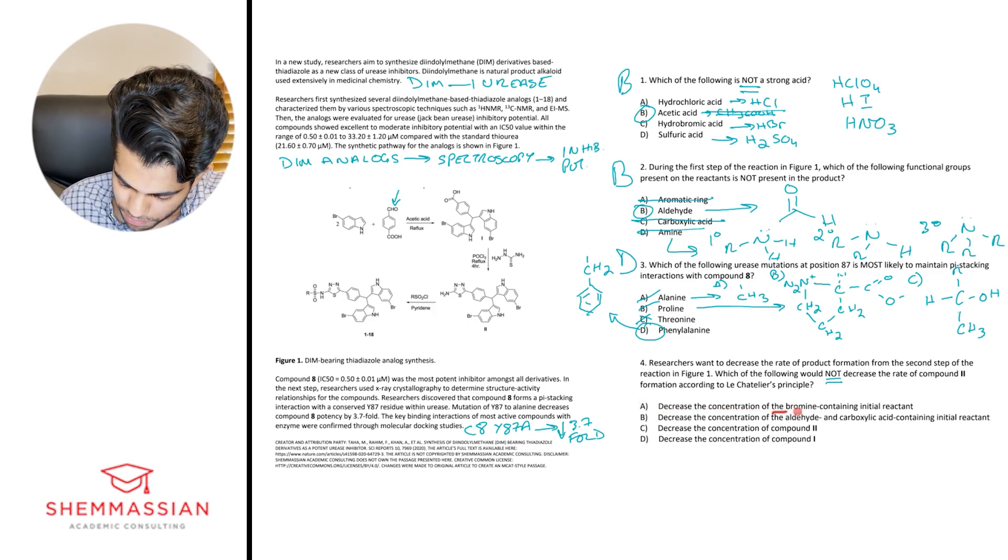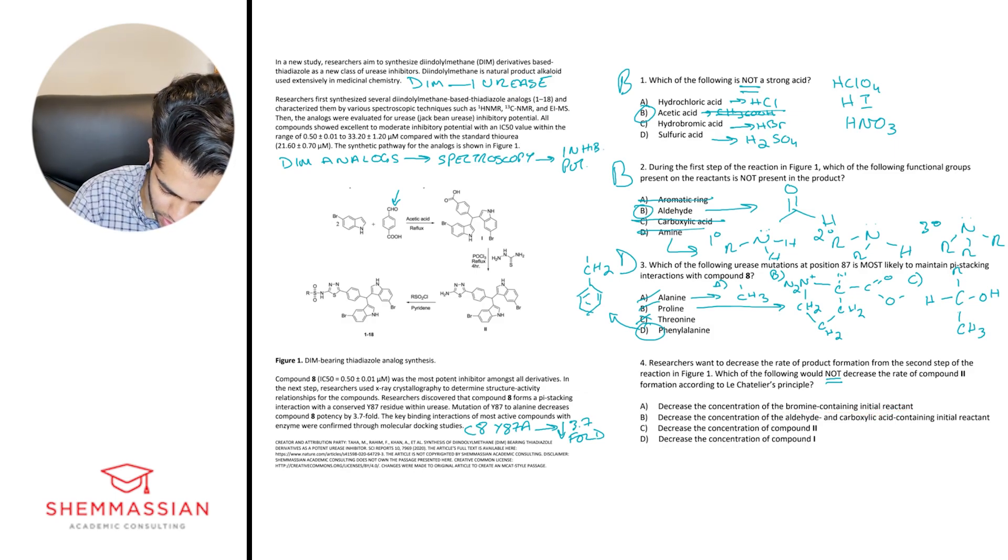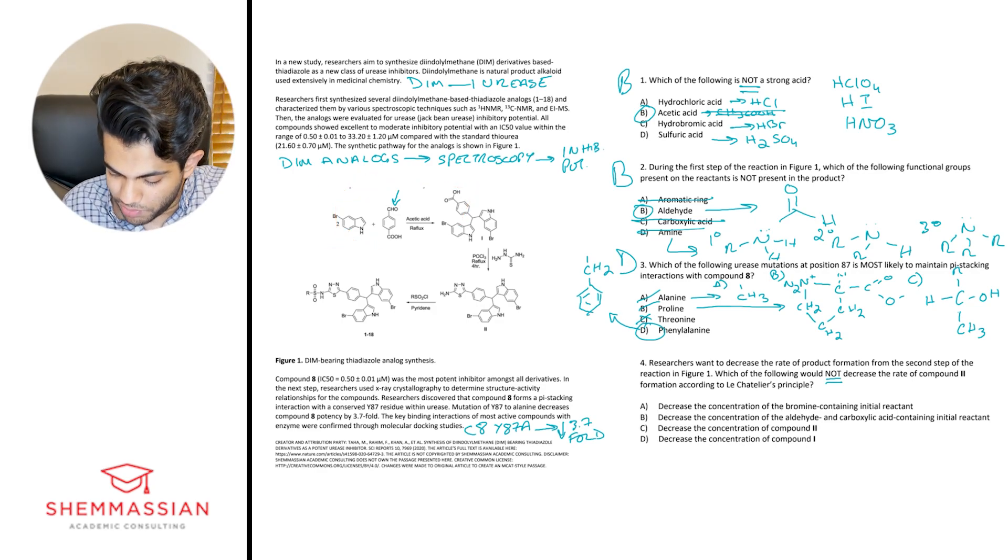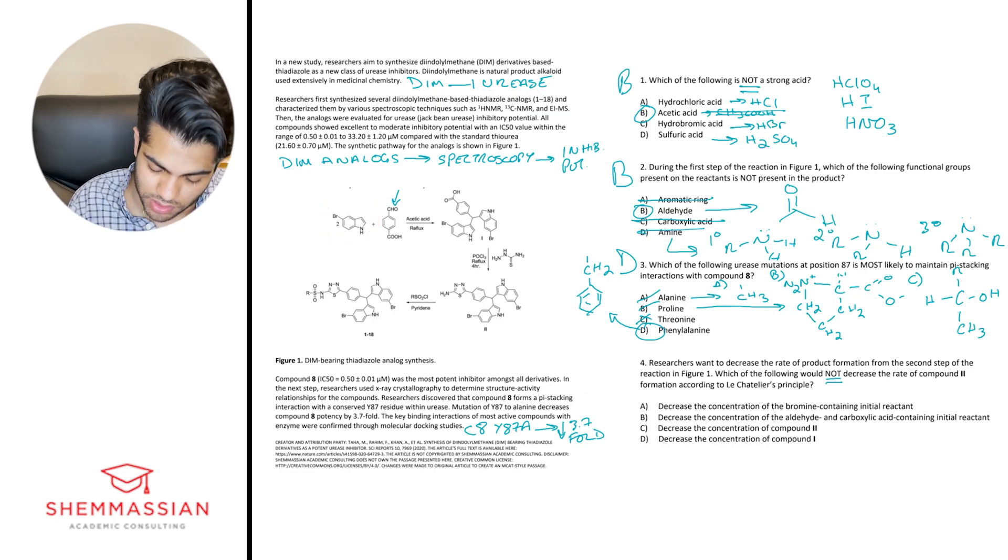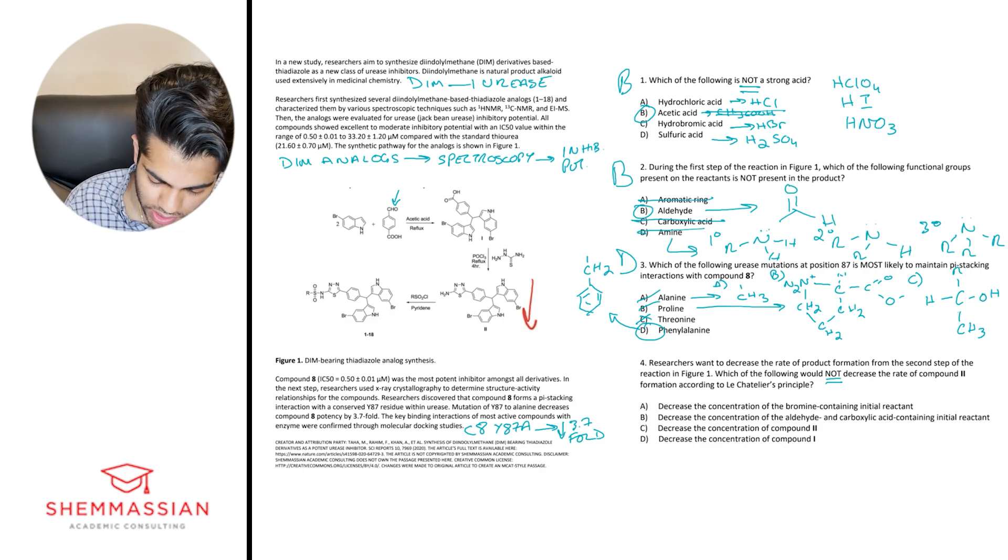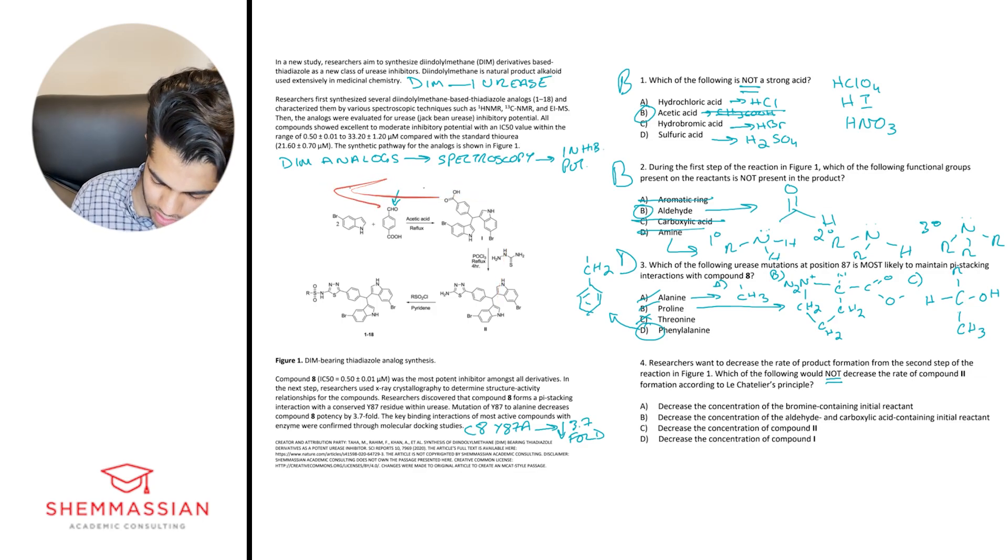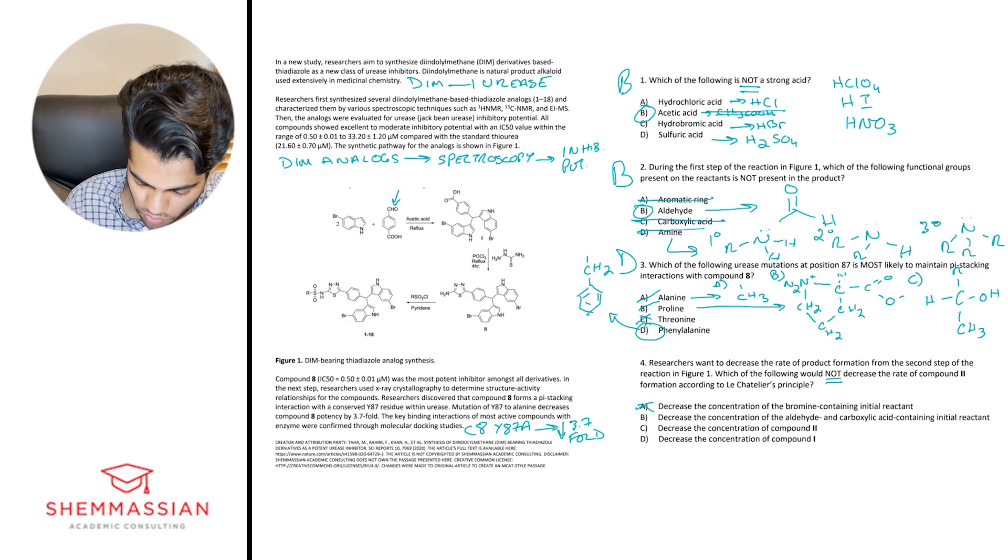So these are the options they give us. A, decrease the concentration of the bromine containing initial reactant. Alright, so if we were to decrease, so this is our bromine containing reactant. If we decrease the concentration of this, what you would have is a shift towards this way, towards the reactants here, right? So because this is going down, we have less material or less, if you kind of want to look at this as balancing the reaction in a sense that if we have less of this now, that means our reaction is going to shift this way to restore the balance here. So we would have more of our initial reaction forming here. And we would also have compound two right here, its formation would decrease because there's less of this starting material. So to summarize, with this going down, the reaction would shift this way. So A is not going to be the right answer because the question asks us which one does not decrease the rate of compound two formation and A does decrease the rate of compound two formation.